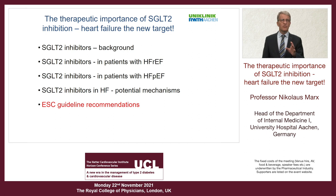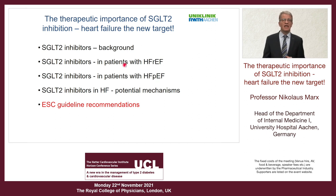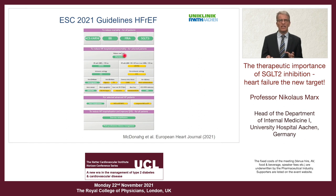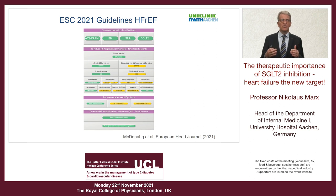Looking at the most recent ESC guideline recommendations on heart failure treatment: the HFrEF data have led to a paradigm change. Previously, the algorithm was to start with ACE inhibitors, beta blockers, MRA, and then transition to sacubitril/valsartan. Now, based on published SGLT2 inhibitor data, SGLT2 inhibitors — alongside the three other drug classes — are first-line therapy in HFrEF patients because they improve prognosis. Given the very early effect seen, current recommendations are that all these drugs should ideally be started within 30 days to ensure patients benefit as early as possible. Unfortunately, the HFpEF data from Emperor Preserved were published a day after the guidelines, so those could not be incorporated.